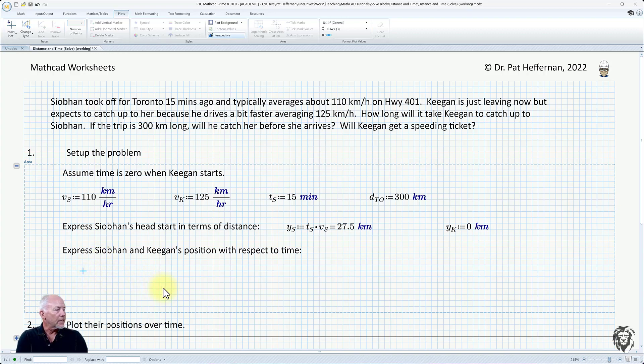What I want to do is set up an expression for their independent positions at any point in time t, using the time of Keegan's start as time equals zero. First is the distance for Siobhan, d_s as a function of time, defined as the velocity Siobhan is traveling v_s multiplied by the time at any given point, plus the position she had a head start at time equals zero, which is y_s. We're going to do something very similar for Keegan. Distance for Keegan d_k is a function of time, defined as Keegan's velocity v_k multiplied by time, plus his position at the start y_k, which we know is equal to zero. So we have two functions, each one that will calculate their position at any given time t.